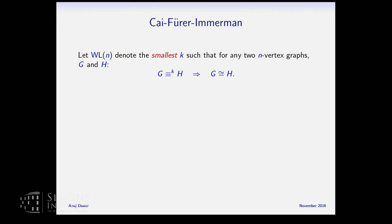Let WL(N) denote the smallest k such that for any two n-vertex graphs, k-equivalence implies isomorphism. For any pair of graphs, at most dimension n suffices. The Cai-Fürer-Immerman result tells us that WL(N) is bounded below by a linear function of N — you need order-N dimension to characterize isomorphism on n-vertex graphs. In particular, using Weisfeiler-Lehman as a general isomorphism algorithm gives complexity n^{O(n)}.